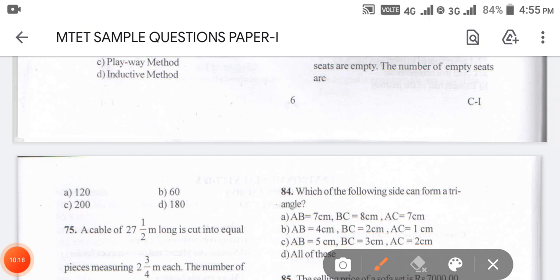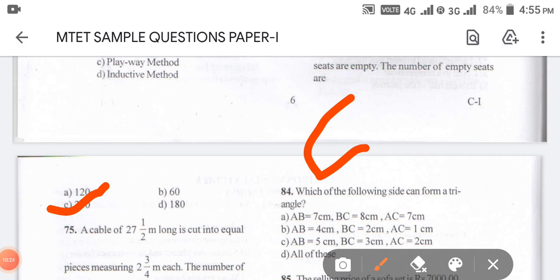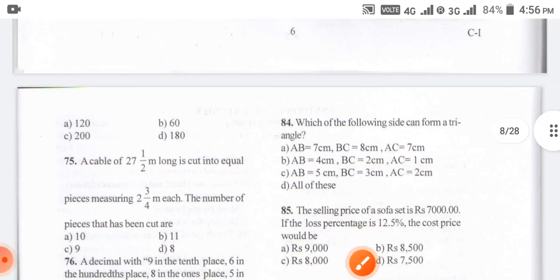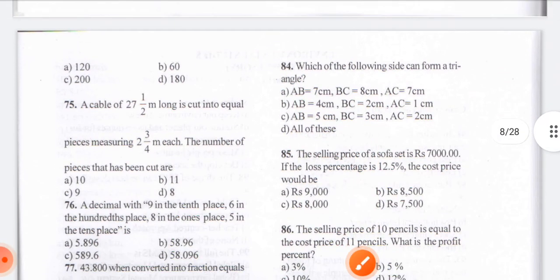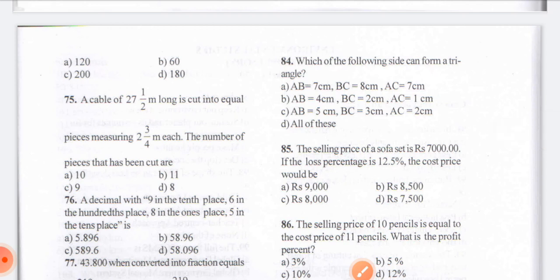The answer for 74 is option C — 200. So 1/3 of 600 is 200. It is an easy question. Coming to question number 75: a cable of 22 and a half meters long is cut into equal pieces measuring 2/3 meter each. The number of pieces that can be cut?